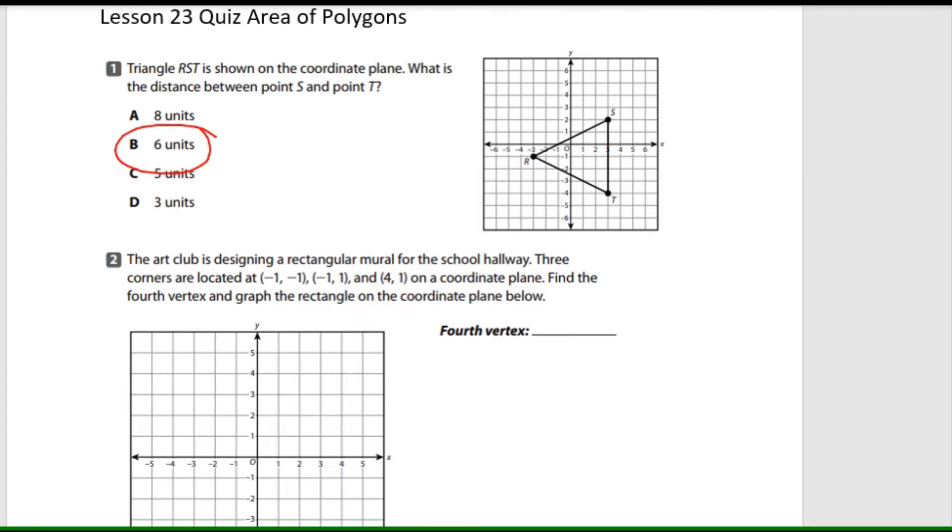Now what if we wanted to use the distance formula? We're going to have to write the order pair for S. What if somebody don't know how to count? We're going to write the coordinates for S and the coordinates for T, and then use our distance formula to find the area. Let's do that.